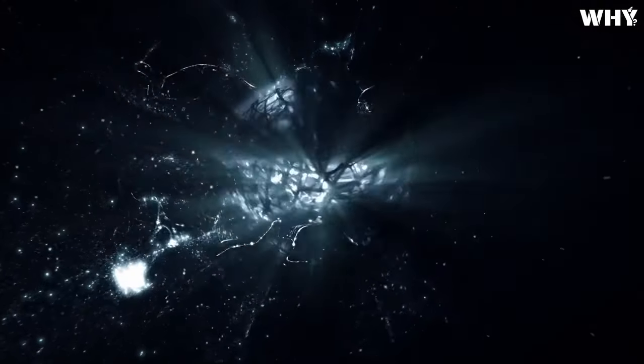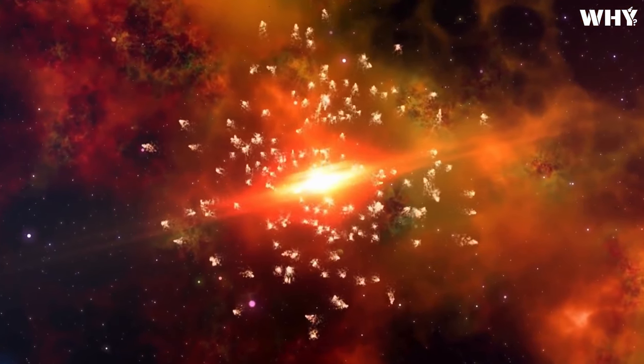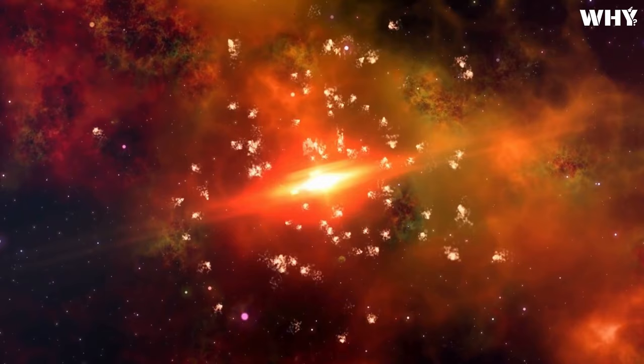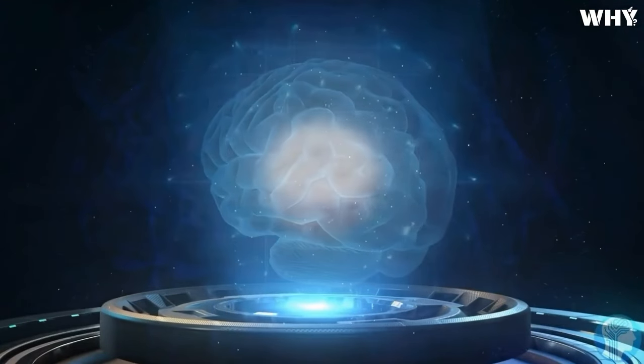We've all heard comparisons such as how atoms resemble solar systems and how the structure of the universe is similar to neurons in our brains. It's noteworthy that the quantity of stars in a galaxy, galaxies in the universe, atoms in a cell, and cells in a living being are all approximately the same colossal number, ranging between 10 to the power of 11 to 10 to the power of 14.